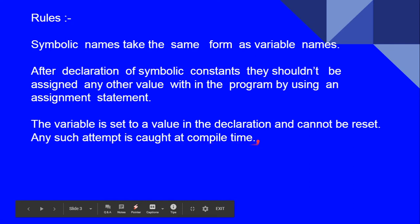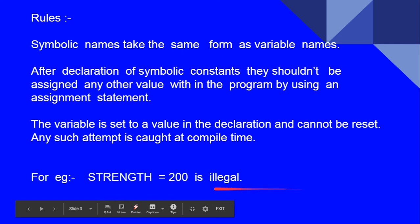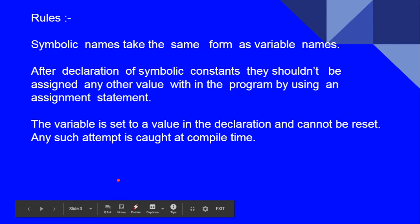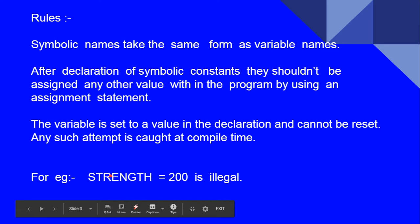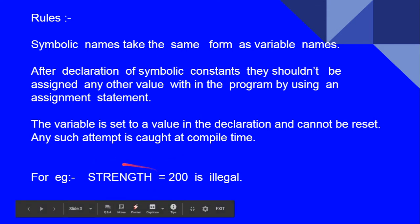Any such attempt is caught at compile time. If we reassign the symbolic constant to another value in the program, the compiler will show an error. For example, we declared final int STRENGTH = 100. If in the same program we write STRENGTH = 200, this is illegal because STRENGTH is a symbolic constant. We can use the name STRENGTH anywhere in the program, but we must not assign any new value to it once it has been declared.